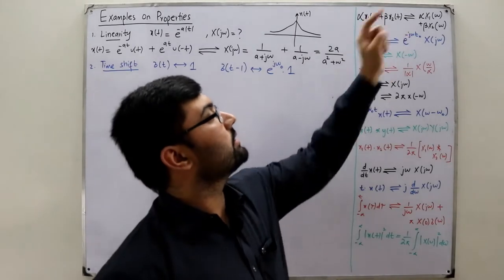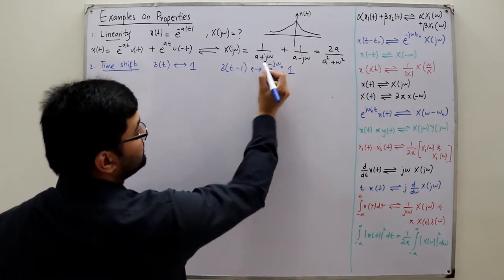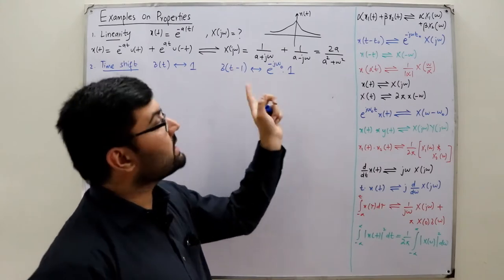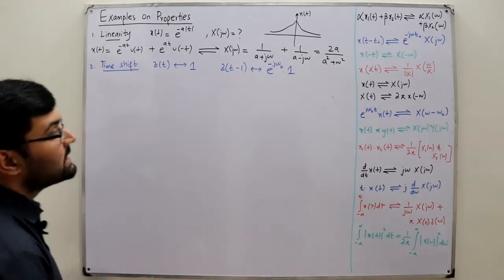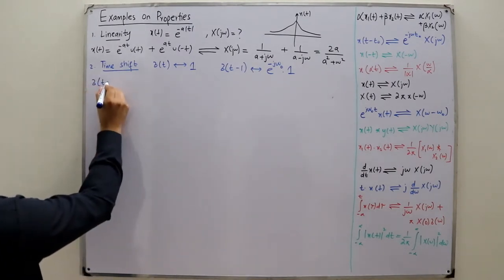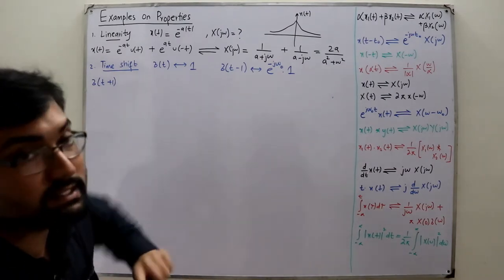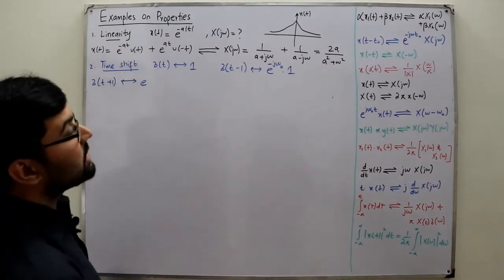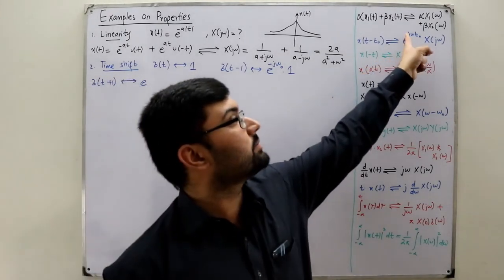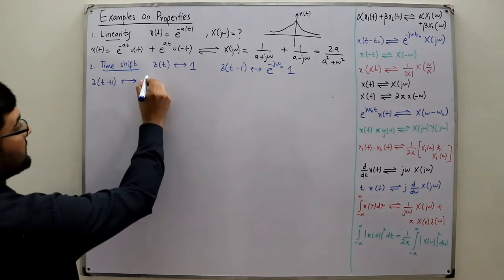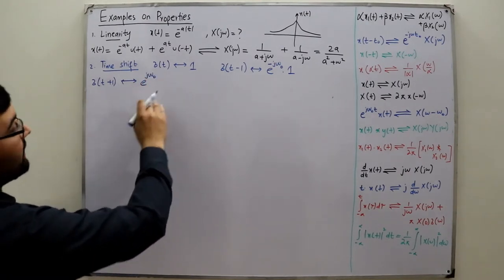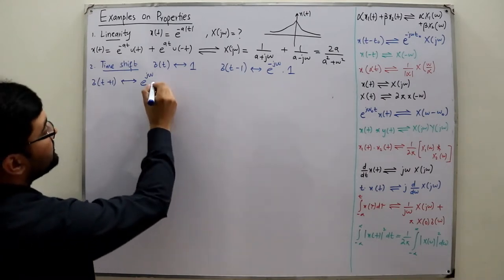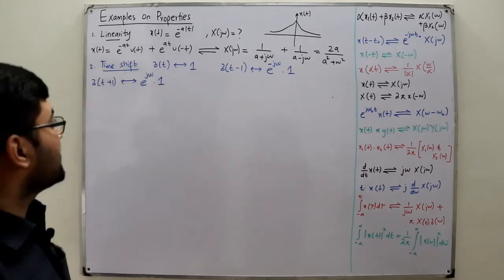Don't confuse the sign. If you have δ(t + 1), then t₀ is negative 1, resulting in a plus sign: the Fourier transform is e^(+jω). Now, a combined example: if x(t) = (1/2)[δ(t - 1) + δ(t + 1)], both the time shift and linearity properties are involved. The Fourier transform of δ(t - 1) is e^(-jω) and of δ(t + 1) is e^(+jω). Combined with the 1/2 factor, this gives cos(ω) — and indeed that is correct.